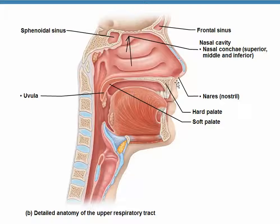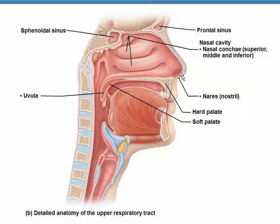Air enters the nasal cavity through the naris, or nostril. The nostril is basically the opening in the nose, the nose being the only portion of the respiratory system that is visible externally.